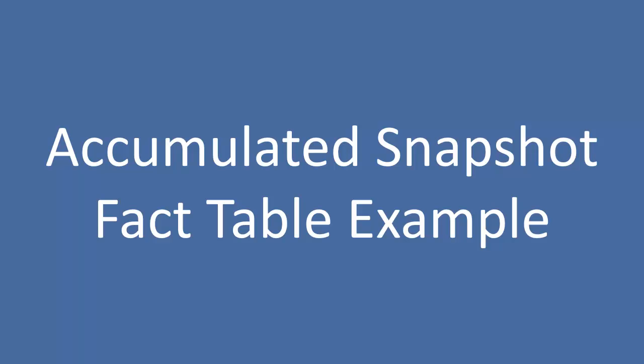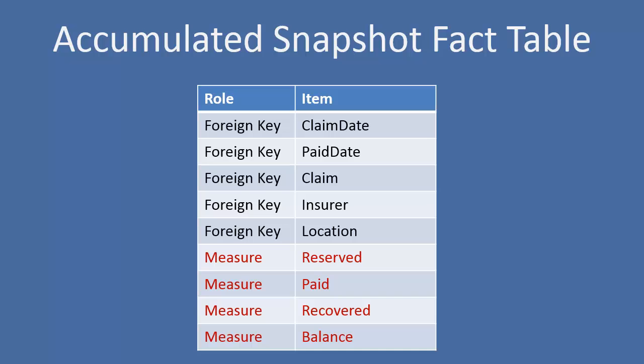An accumulated snapshot fact table is very similar to the periodic snapshot, with the exception that instead of spanning time, we're going to span a business process. In this case, we're looking at an insurance claim. Claims have a clear beginning and an end — someone files a claim, the claim is paid, and eventually the claim is closed. So we have foreign keys on our claim date and our paid date, plus the claim, the actual insurer, and a location. Our measures include reserved, paid, recovered, and balanced.